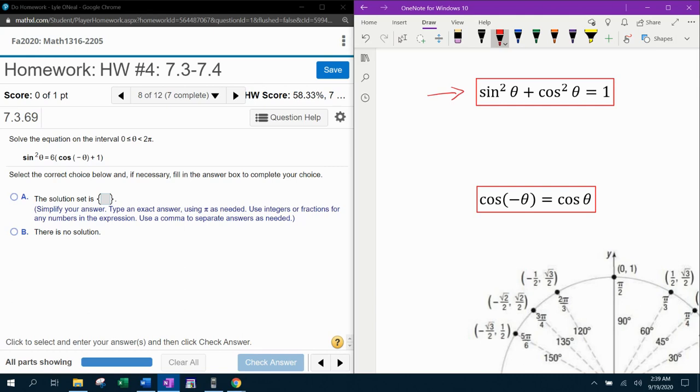So the Pythagorean identity, sine squared theta plus cosine squared theta equals one. I'm going to need to take that identity and isolate the sine squared theta by moving the cosine squared theta to the other side. So that tells me that sine squared theta is equal to one minus cosine squared theta. What that also tells me, it tells me anytime I see a sine squared theta, I can replace it with one minus cosine squared theta.